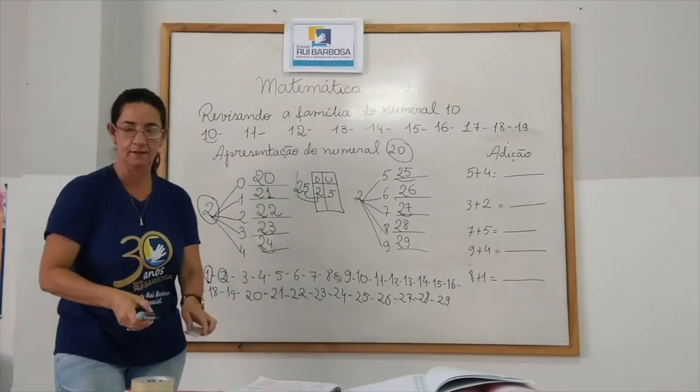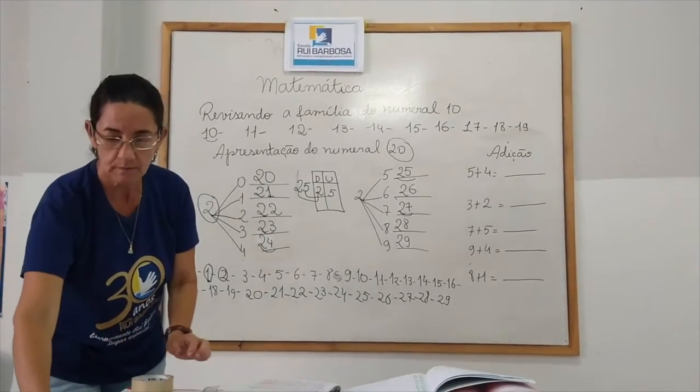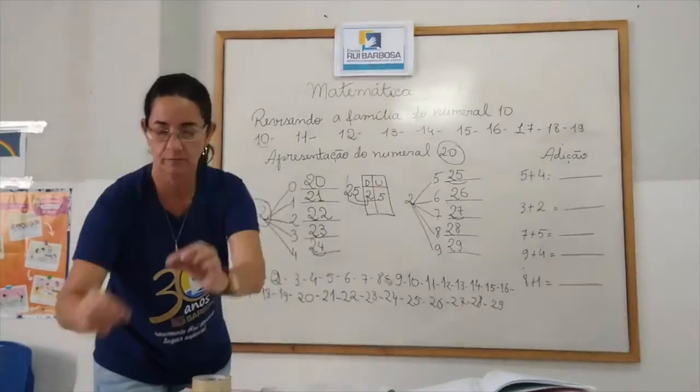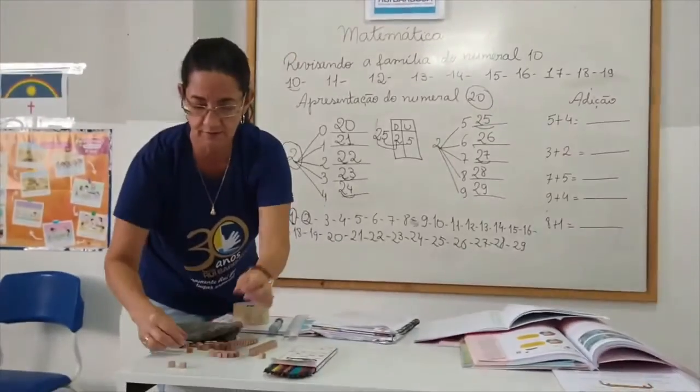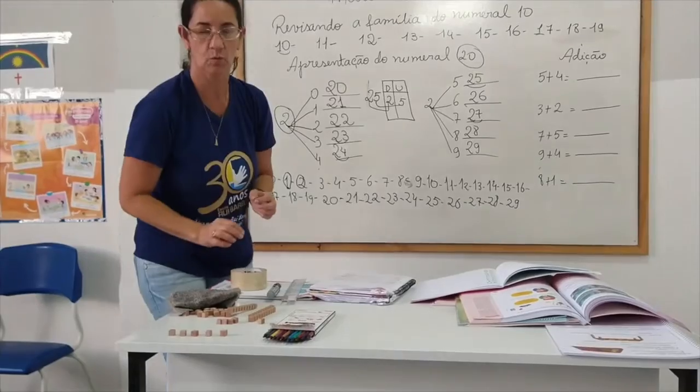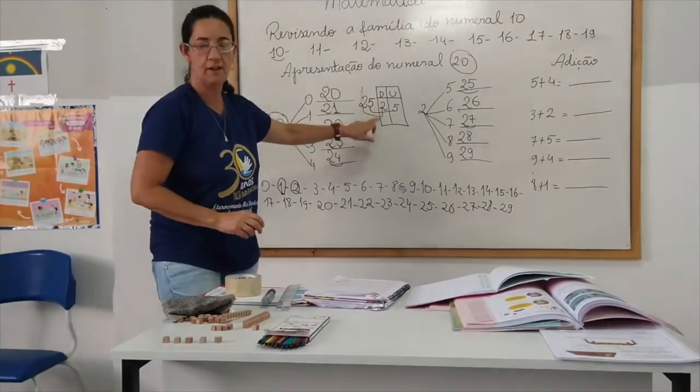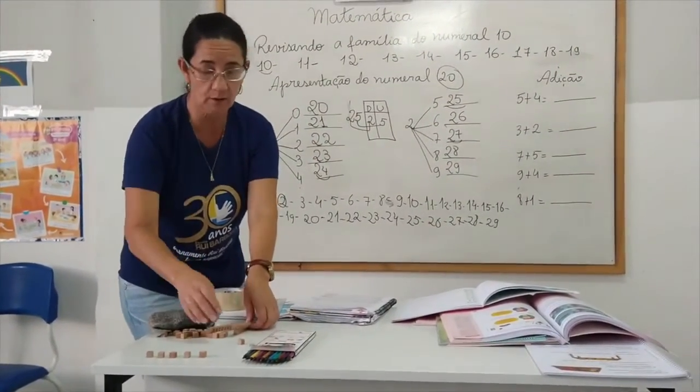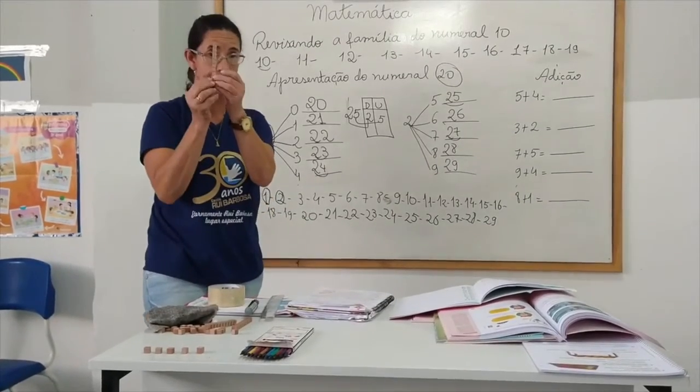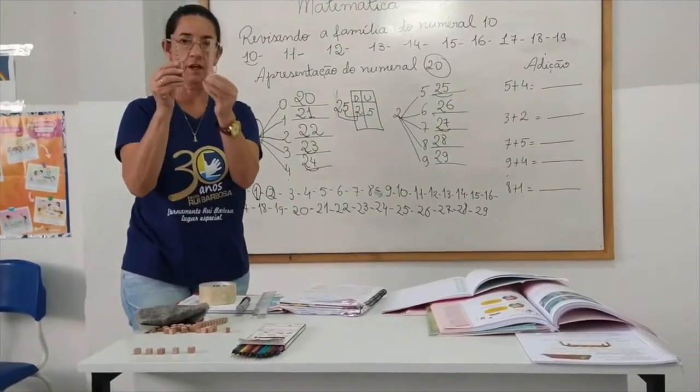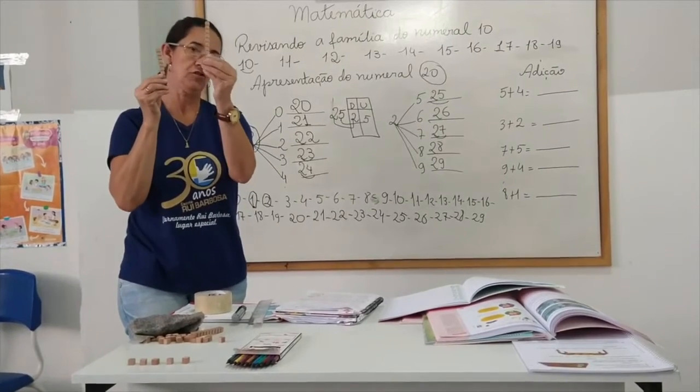5 unidades e 2 dezenas. Você pode representar o material do lado? 5 unidades, 1, 2, 3, 4, 5. 2 dezenas. A gente aprendeu que uma dezena é igual a quanto? A 10. Então, 1 tirinha, mais 1 tirinha. 10, mais 10.